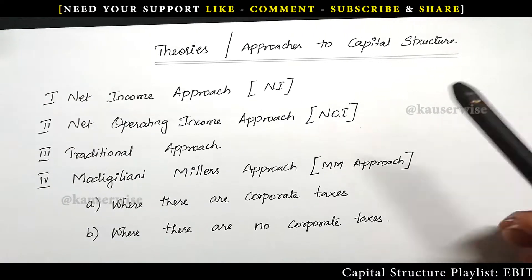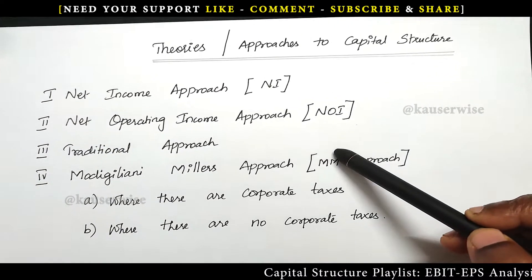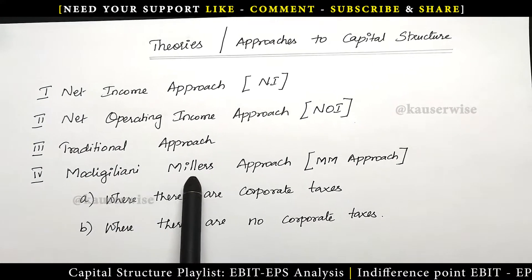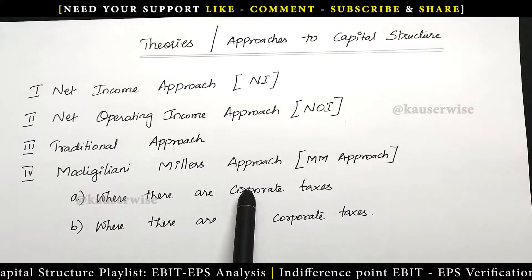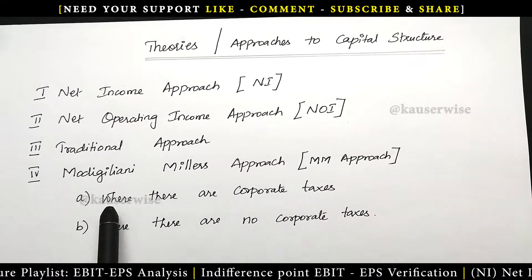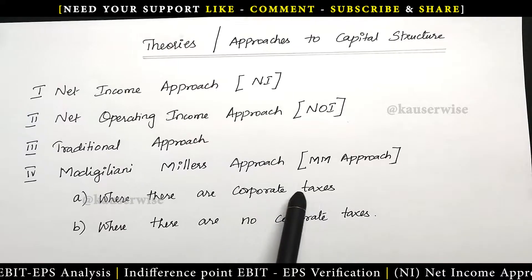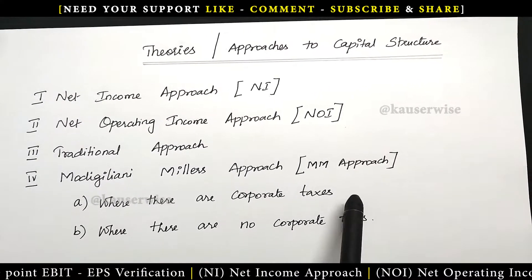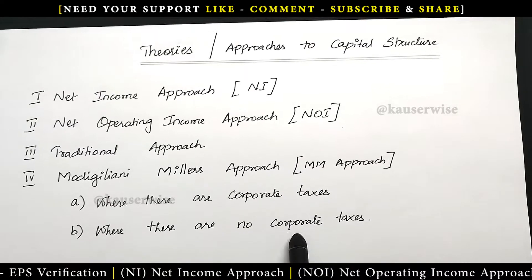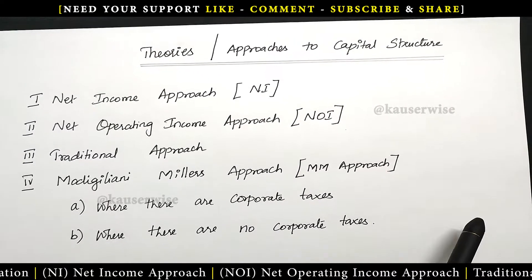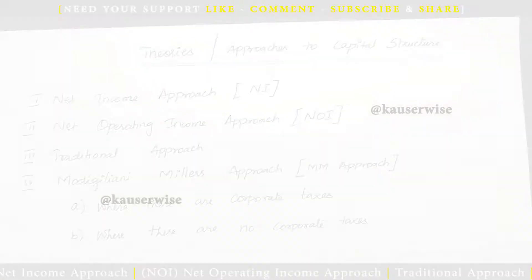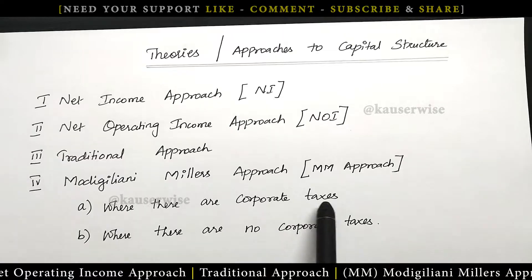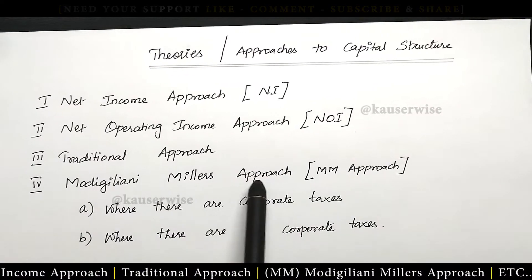In the previous videos we have seen the above three different approaches. Now in this video we are going to see the fourth one, that is the Modigliani-Miller approach. It has two different models: the first one where there are corporate taxes, and the second one where there are no corporate taxes. In this video we are going to see the first model, where there are corporate taxes according to MM approach.